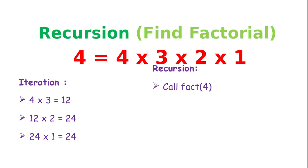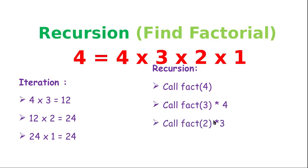Now let's understand how that differs from recursion. First we call the factorial four function, but it is very lazy — it calls factorial three and says whatever answer I get, I'll multiply it by four. Factorial three is also lazy, so it calls factorial two and says whatever answer I get I'll multiply it by three. The same phenomenon occurs — factorial two is also lazy, so it calls factorial one and says whatever answer I get I'll multiply it by two.